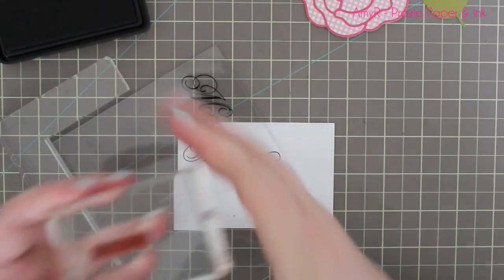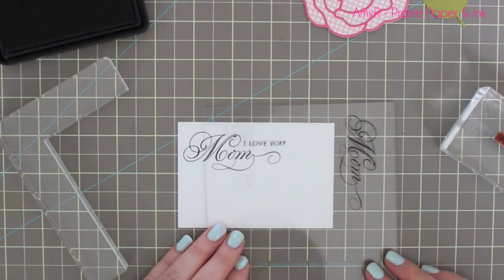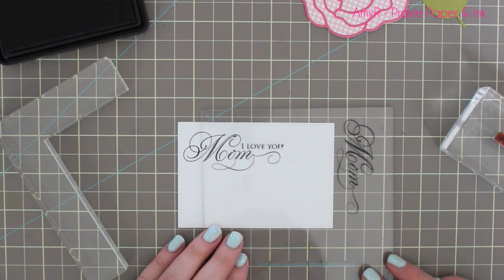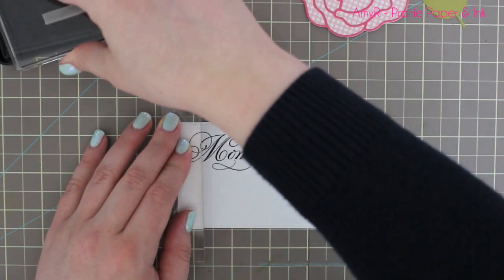I get that lined up and then ink it up again and stamp it onto the cardstock. Then I do the exact same thing with another stamp from the same set, the one that says 'I love you.' I wasn't sure where I was going to put it, but I liked it better on the top there. Get that lined up as well and then ink it up a second time and stamp that into place.